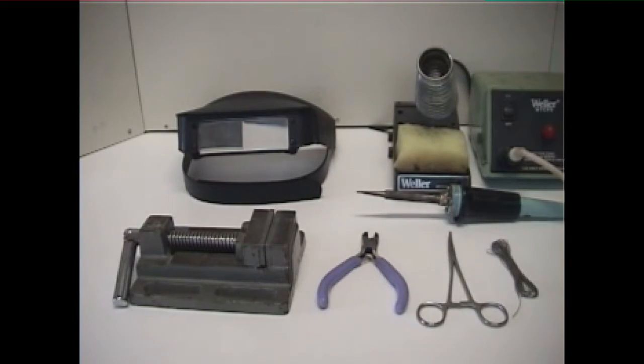Next is solder. This should be rosin core solder and not acid core. The smaller the diameter, the better. A soldering iron should be of low wattage and have a fine tip. Make sure you have a wet sponge to wipe the tip and keep it clean. Very important. Last I would recommend some kind of magnifier for your eyes. You are working with real small components and any magnification helps.